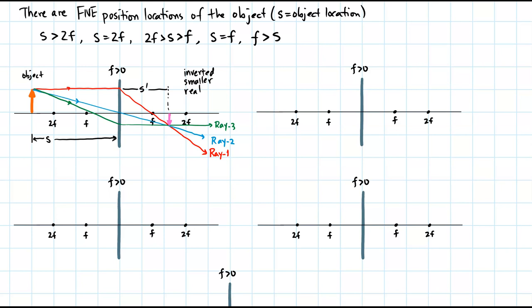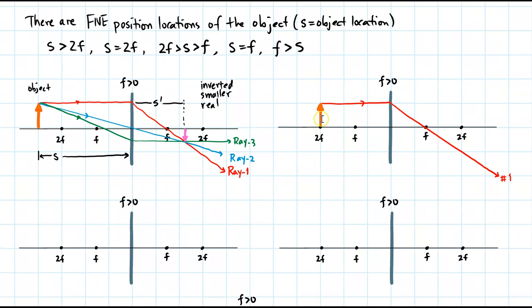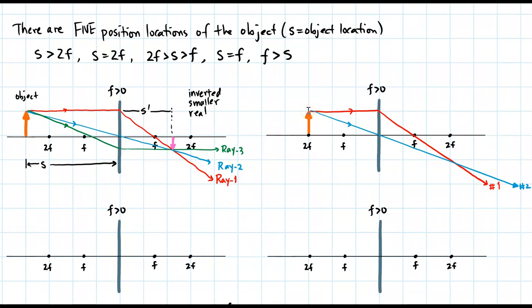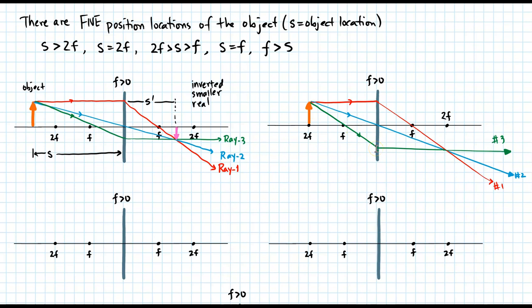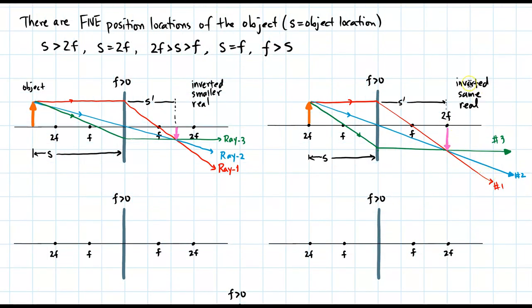Now let's move the object to 2F. Ray one goes parallel to the central axis and refracts through the focal point. Ray two in blue goes from the tip through the focal point and crosses. Ray three goes through the focal point, refracts, and crosses with the other rays. The image in pink is inverted, the same size as the object, and real because it's on the other side of the lens. The image distance is S prime and the object distance is S.